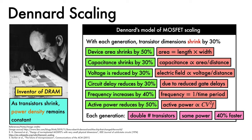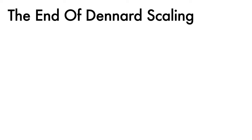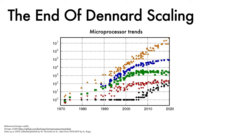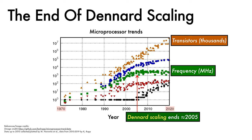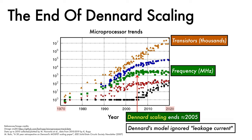Dennard's scaling was a wonderful thing, but like many wonderful things, it had to end. Here is a chart of microprocessor trends, with the year plotted on the x-axis from 1970 to 2020. Transistor counts climb fastest and look healthy. However, the green points indicate microprocessor frequencies in megahertz. For years, Dennard's scaling had delivered massive speed gains, but around 2005 this came to an end, and it became impractical to keep increasing microprocessor clock frequencies.